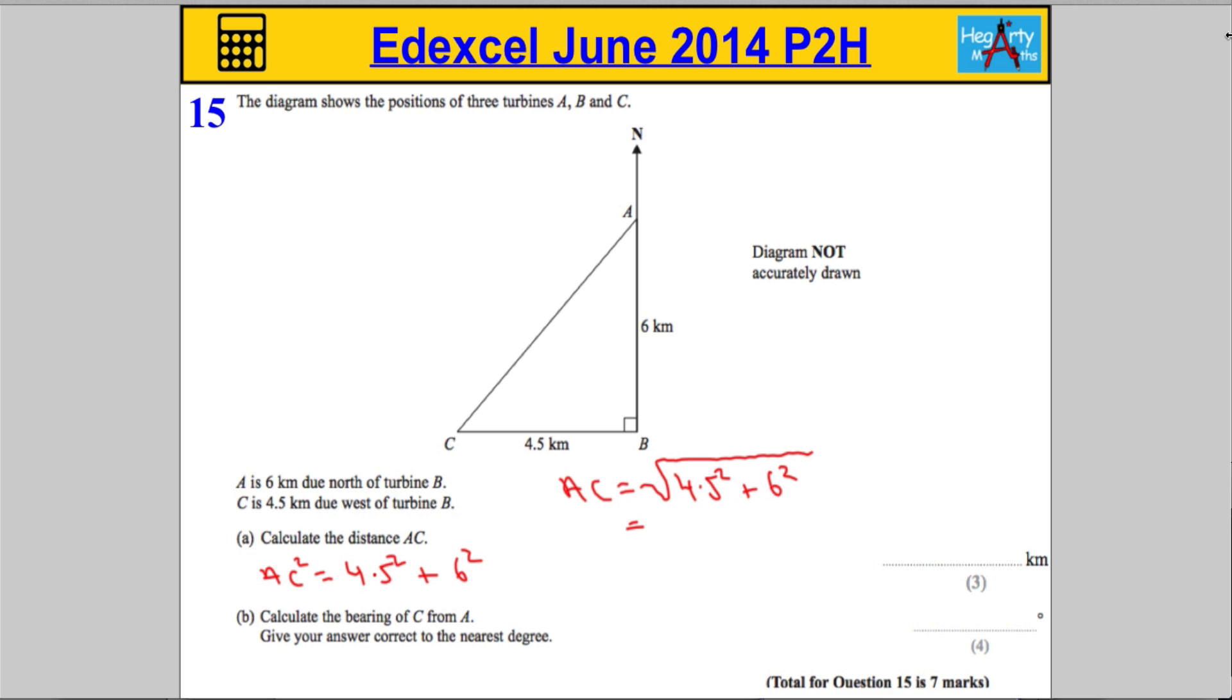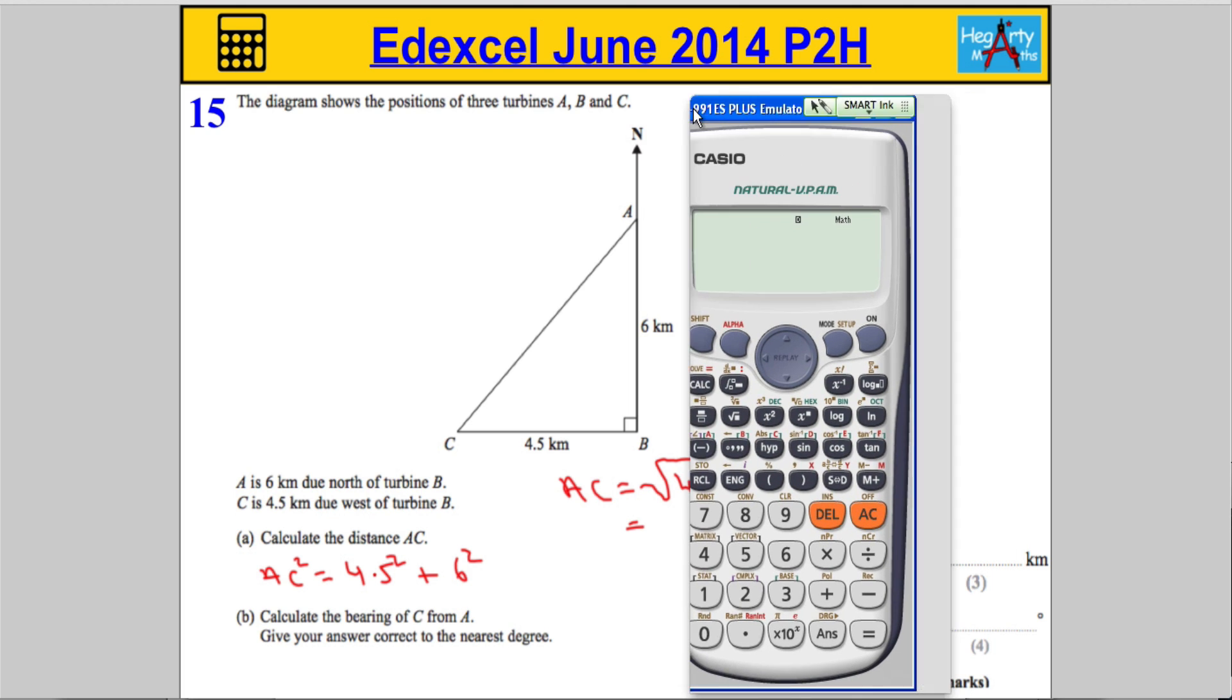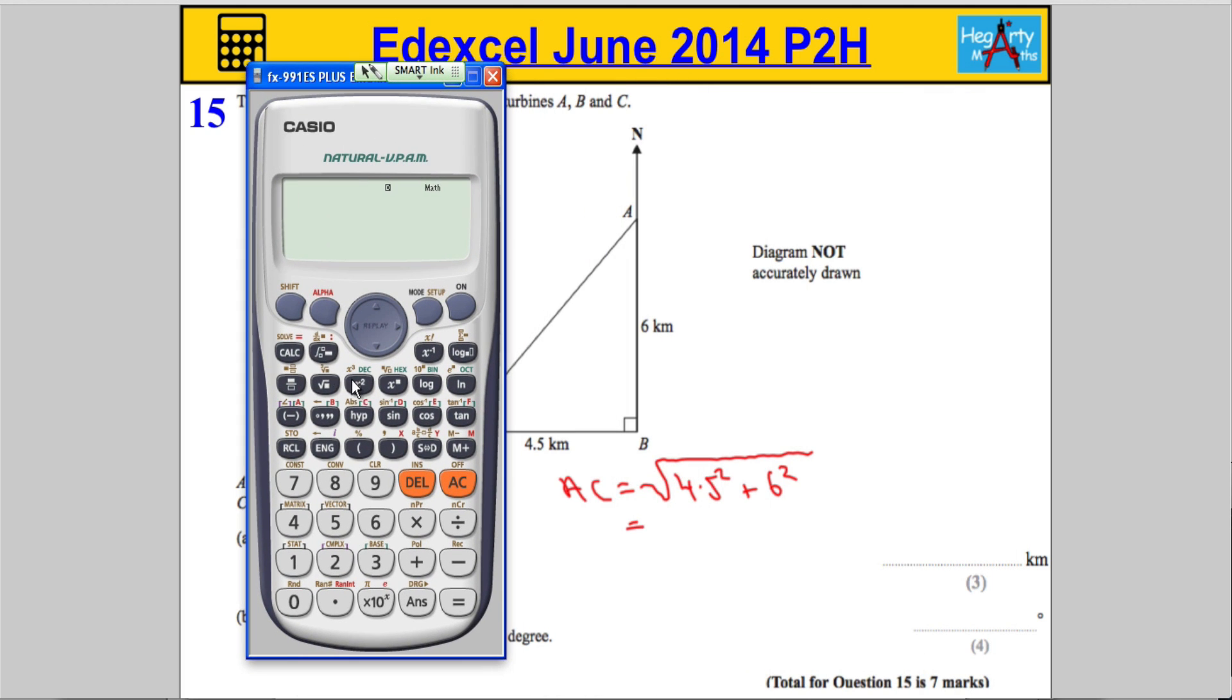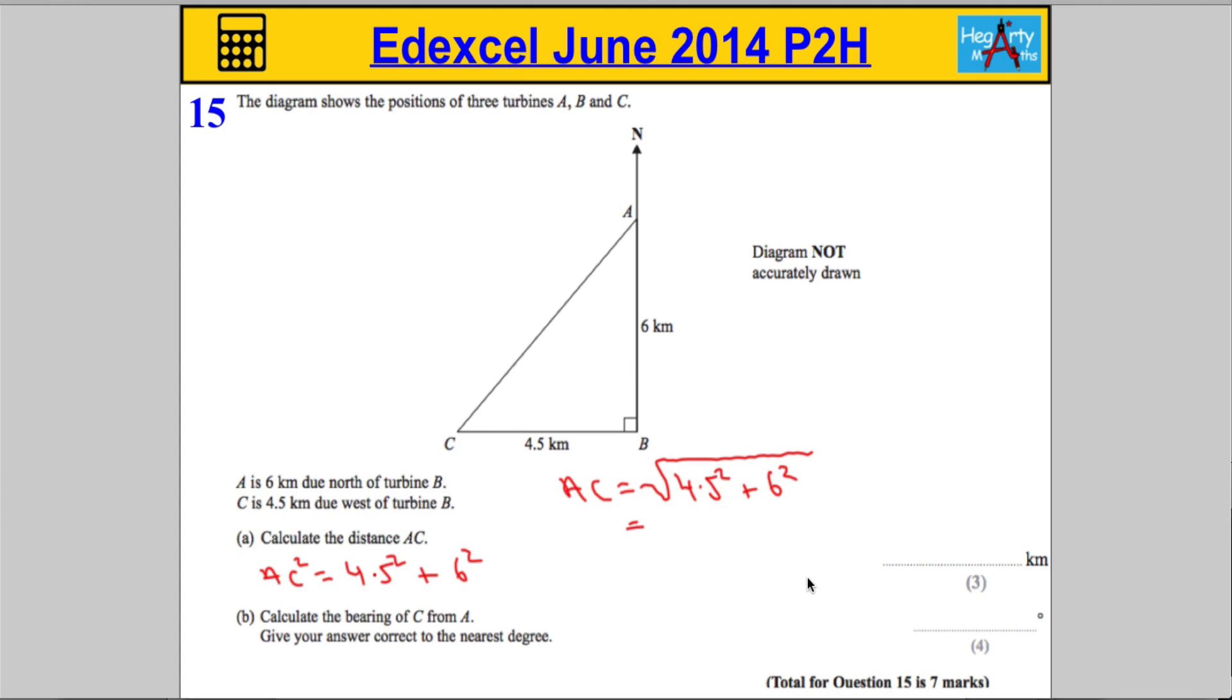So, get the calculator out, get this guy to do all the hard work. We're going to take the square root of 4.5 squared plus 6 squared. In other words, you square both numbers, you add them together, and then you're going to take the square root. I'm going to take the calculator to do all the hard work there. We get 7.5.